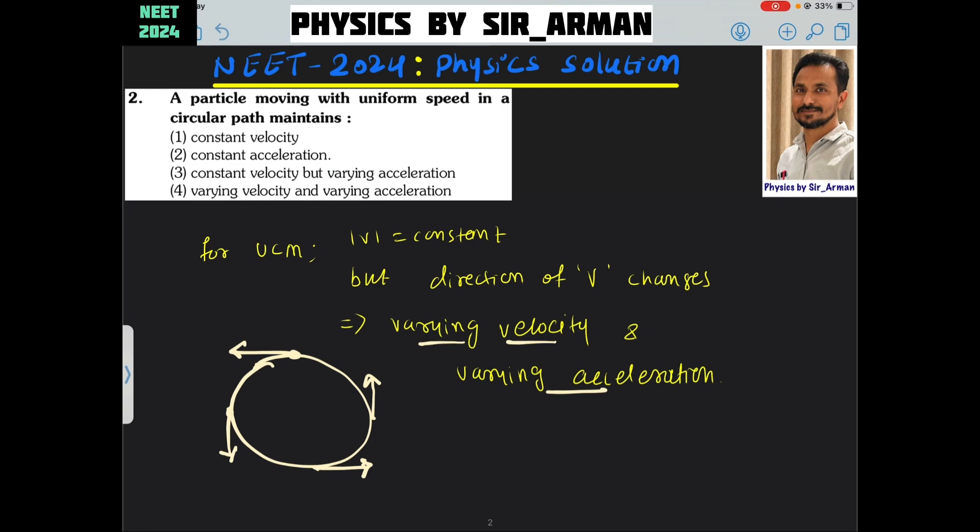But if you check, let us assume the object is here, and when it comes here, in that case, the change in velocity will be root 2 v. But when the object is here and comes here, at this point, the change in velocity will be minus 2 v or 2 v.